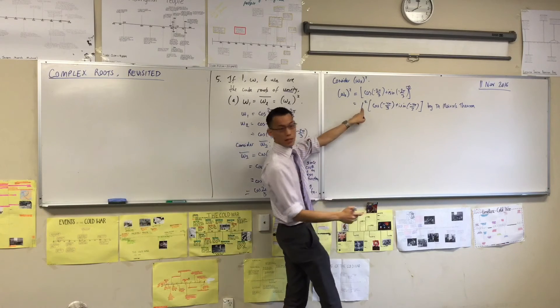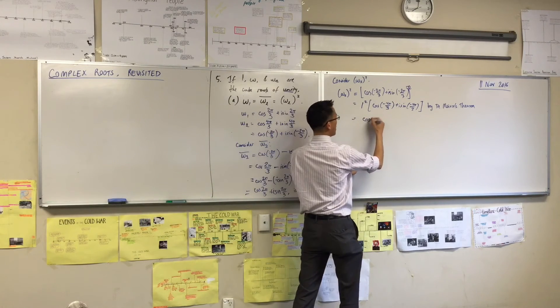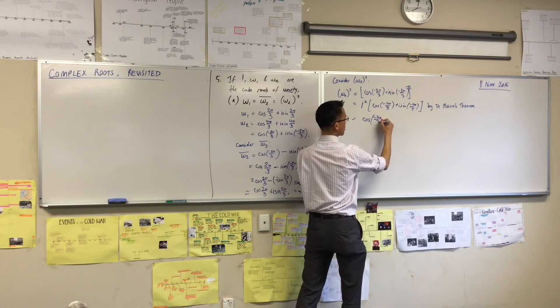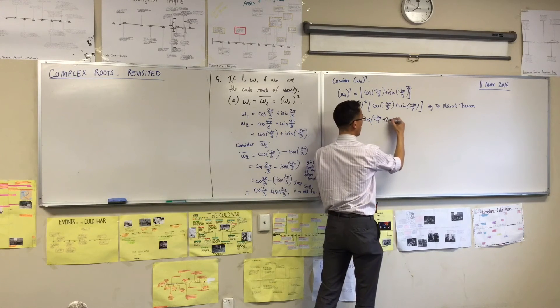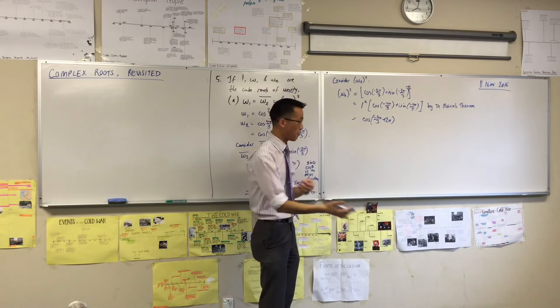So what I'm going to do is, I don't need to write this anymore, it's just 1, I'm going to say, well, cos of some angle, right, is the same as that angle plus 2π, right? Because cosine is periodic, every 2π radians.